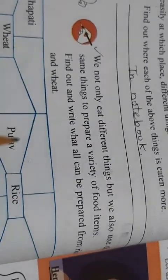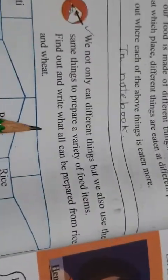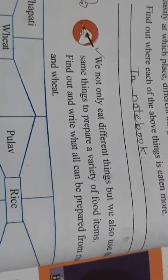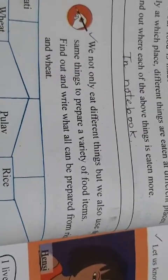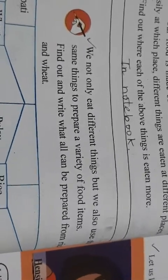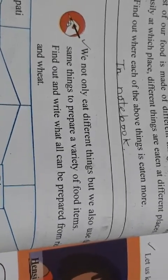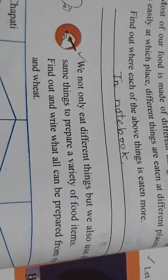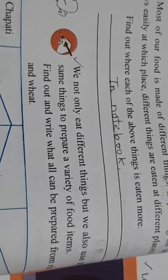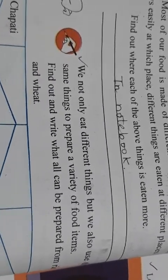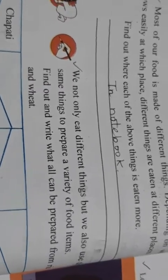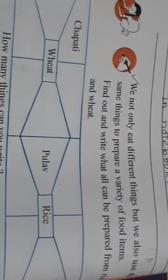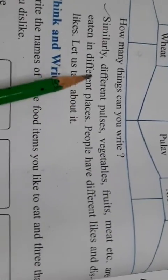Now, we not only eat different things, but we also use the same things to prepare a variety of food items. Hum jo cheez khate hain, usi mein se hum alag-alag cheezein bana bhi seekh lete hain. Ek cheez mein se — jaise chawal hai, rice hai — usse idli bana sakte hain, chawal bana sakte hain, pulao bana sakte hain, biryani bana sakte hain, kheer bana sakte hain. To ek cheez mein se bahut saari cheezein bana sakte hain.